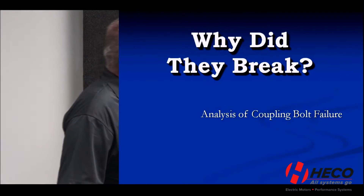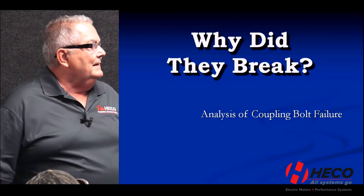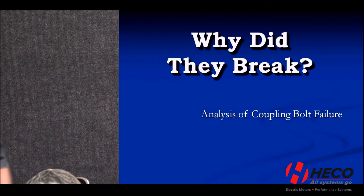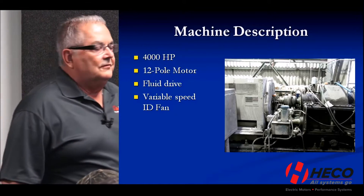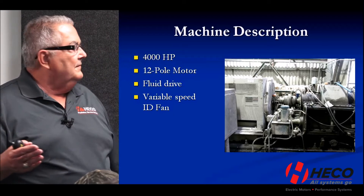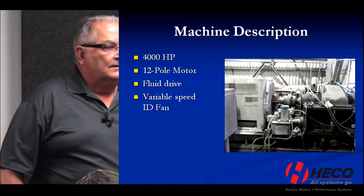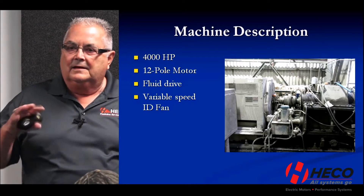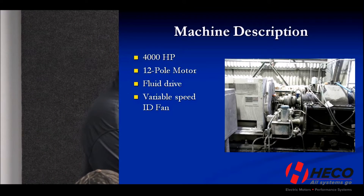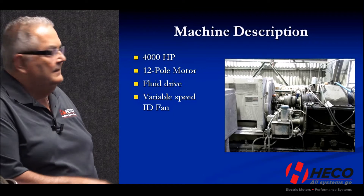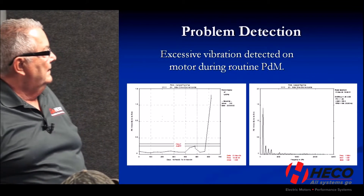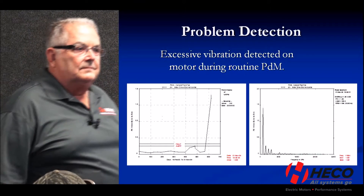Next, some very interesting pictures titled 'Why Did They Break?' Why did the coupling bolts fail on a coupling — actually broke off and became shrapnel? Machine description: 4,000 horsepower 12-pole motor driving a fluid coupling, or fluid drive, which then drives a large ID fan. The fluid drive allows them to change fan speed based on process conditions, while the motor is a constant-speed 12-pole motor. There's a coupling going into the fluid drive, then another coupling leading to the large ID fan.